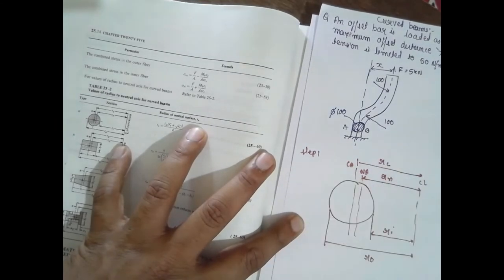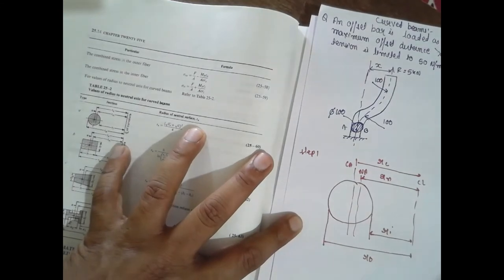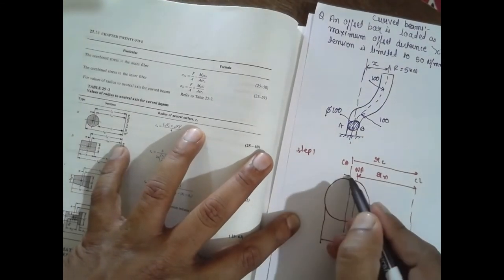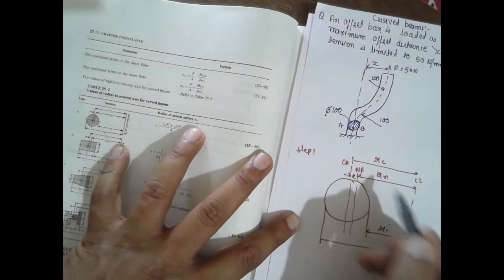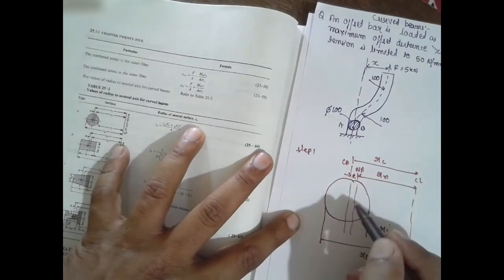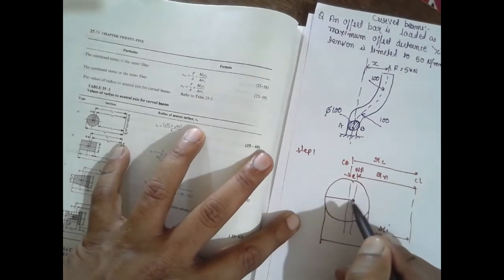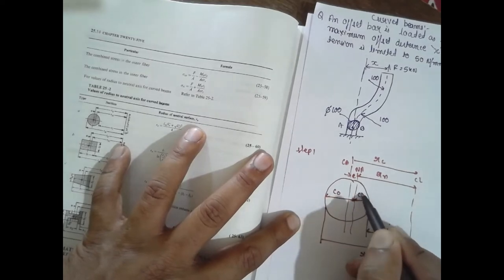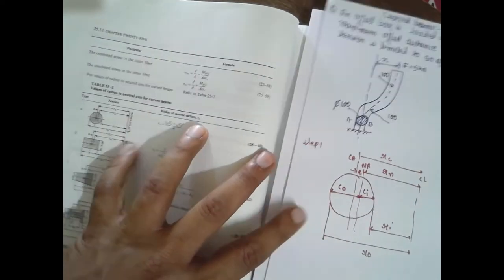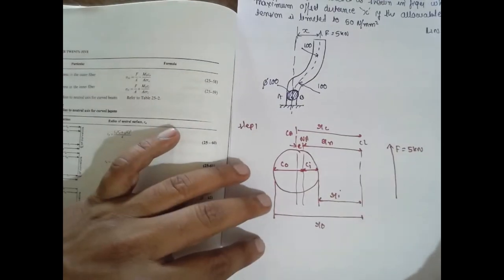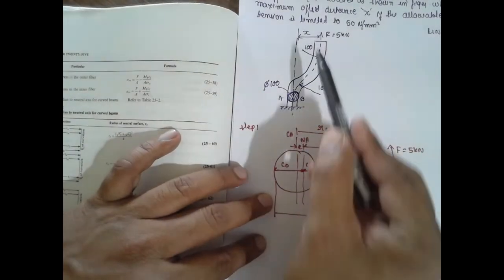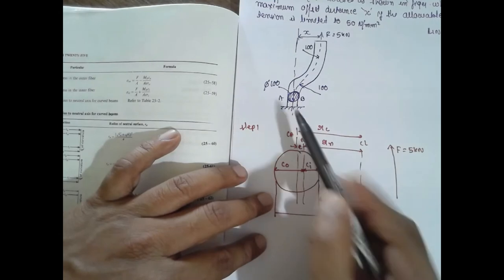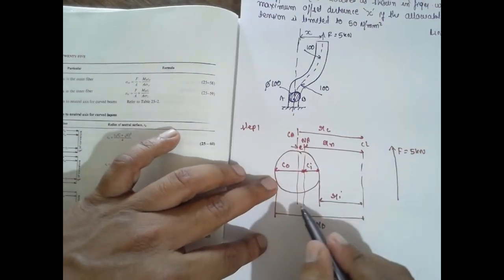This is the difference between r0 and e. From this point, this line is nothing but c0. This point to this is nothing but c.